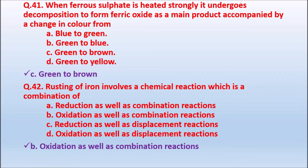Question 42: Rusting of iron involves a chemical reaction which is a combination of — reduction and combination reaction; or oxidation and combination reaction. The correct answer is B — rusting of iron involves a combination of oxidation as well as combination reaction.